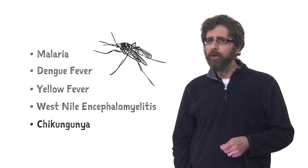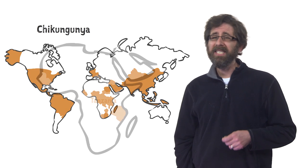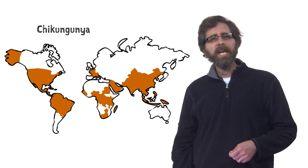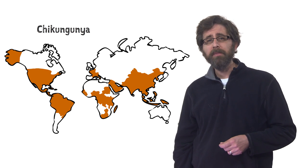Chikungunya is a mosquito-borne disease caused by a virus that was first described in Tanzania in 1952. It's now been seen in over 100 countries on five continents. Chikungunya outbreaks have become more common in the past 10 years, some of which have infected over 1 million people.